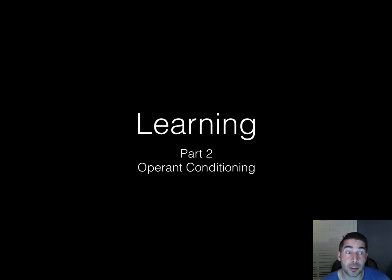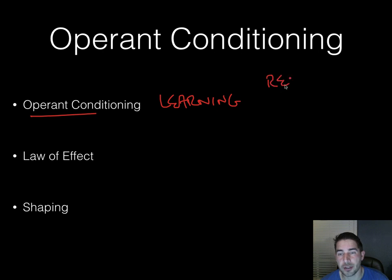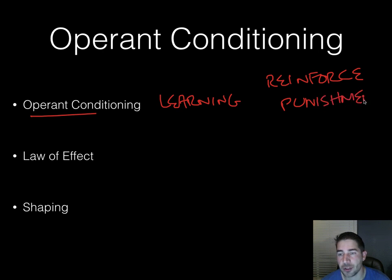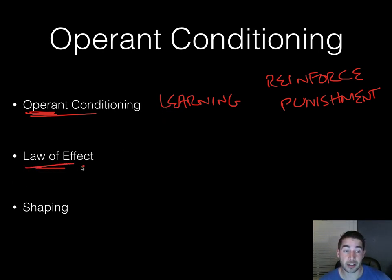Operant conditioning part two. Operant conditioning is a type of learning that occurs when there's reinforcement or punishment — it refers to anything that has to do with reinforcement or punishment. You learn to operate based on the environment, based on what's happening around you. If the environment's rewarding you, you do it more often; when it's not, you do it less. That's the law of effect.